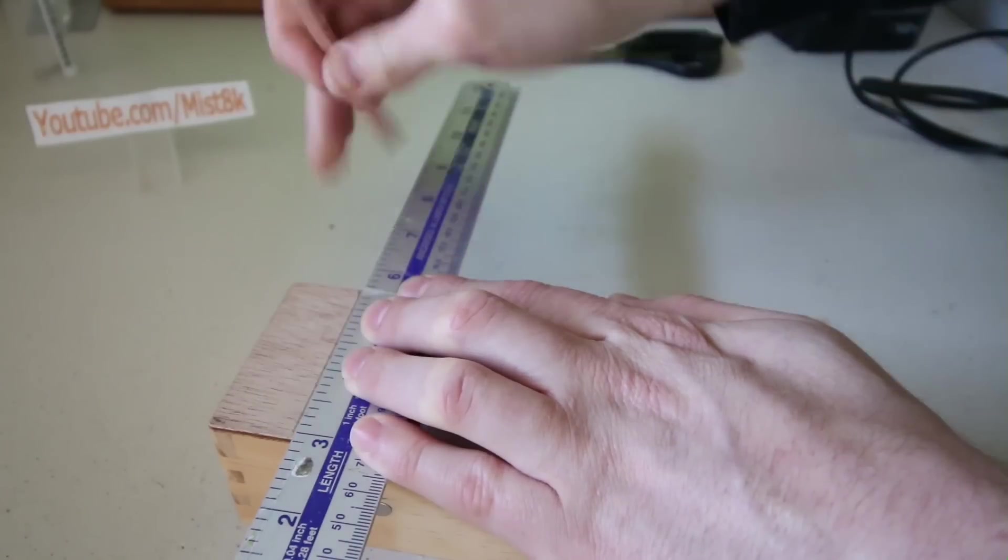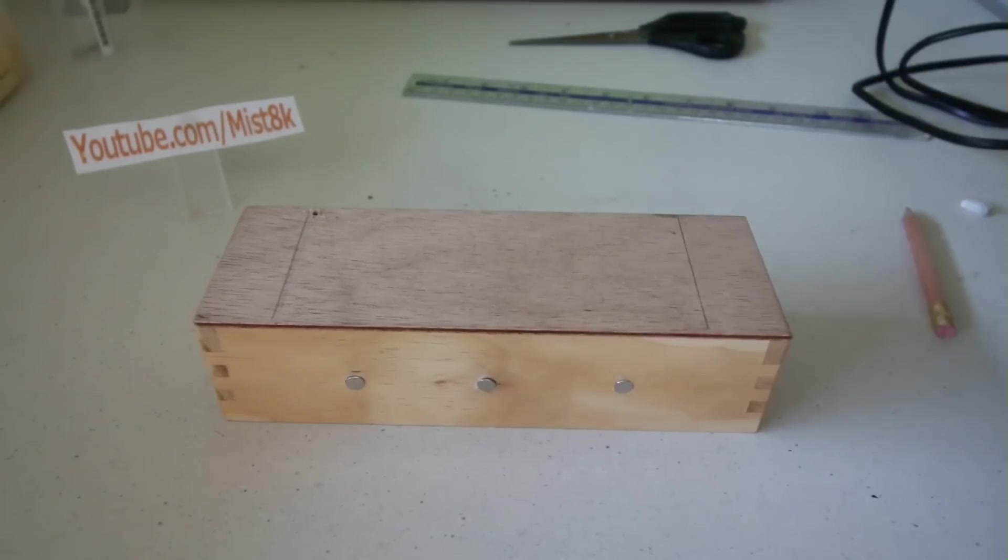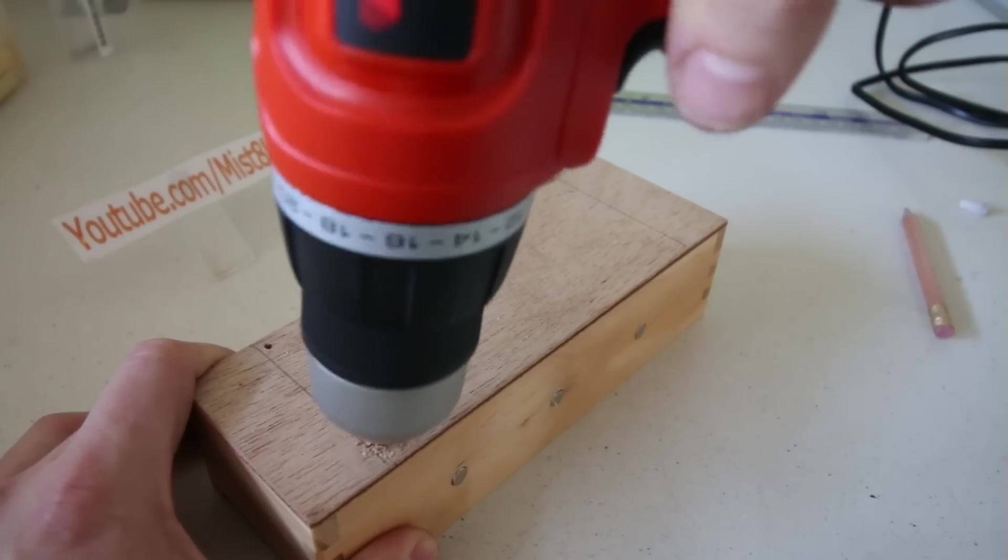To make sure it's centered I drew two lines an inch from either side. To create the letter K I began by making three small holes as shown.